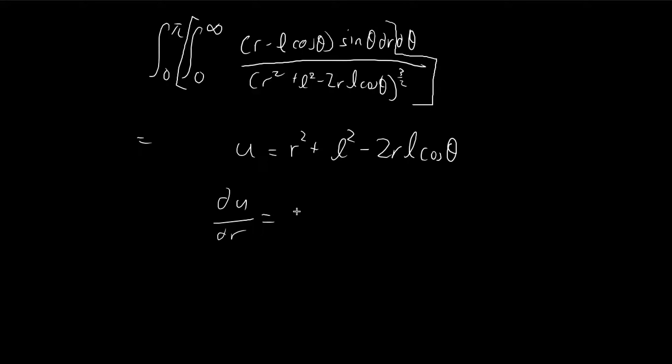So this is in terms of r, 2r minus 2l cosine theta. And then because this is a double integral, some of you might be thinking when you do a substitution for double integrals, you need to consider Jacobians. So you might be wondering whether this kind of treatment is correct or not. So you can actually do the substitution, you can treat the substitution as being this substitution plus theta being equal to theta.